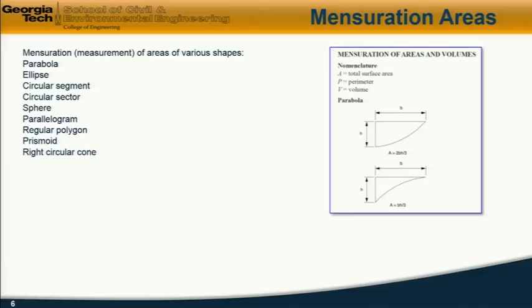An example is given here, the area of a parabola, of half a parabola, of height h and width b, is given by this formula: A equals 2bh over 3, where A is the area and p is the perimeter. It also gives volumes if this is a three-dimensional object. This is the area of the parabola above the concave curve, and above a convex curve, the corresponding equation is A equals bh over 3. Similar equations are given for all the shapes listed on the left-hand side.